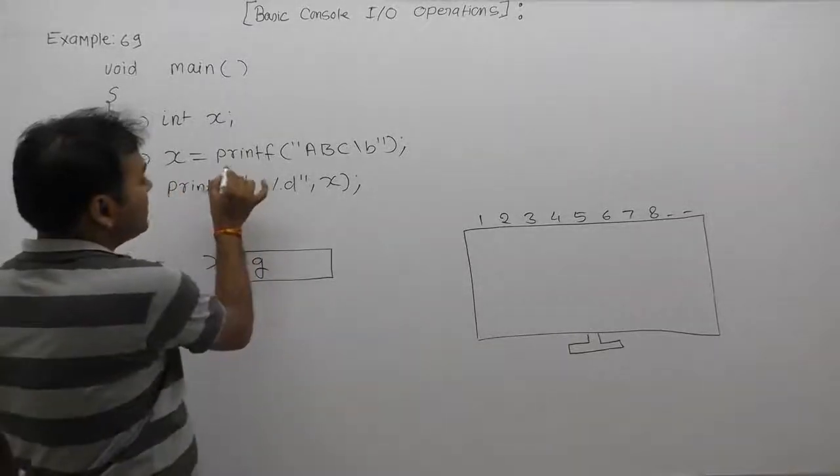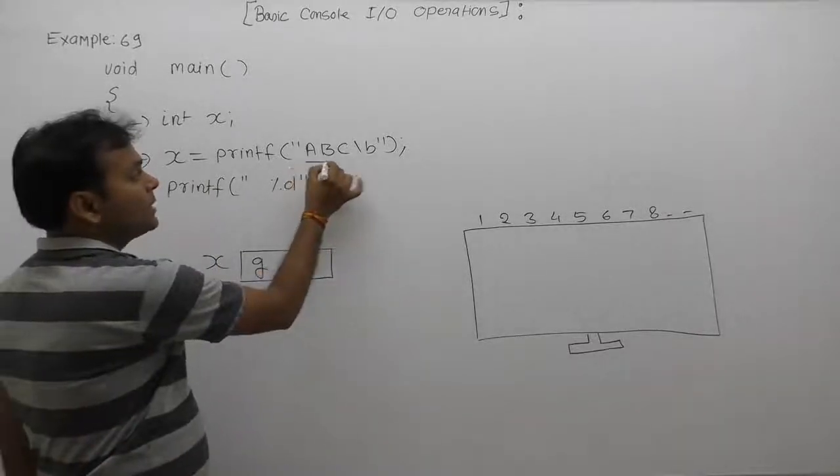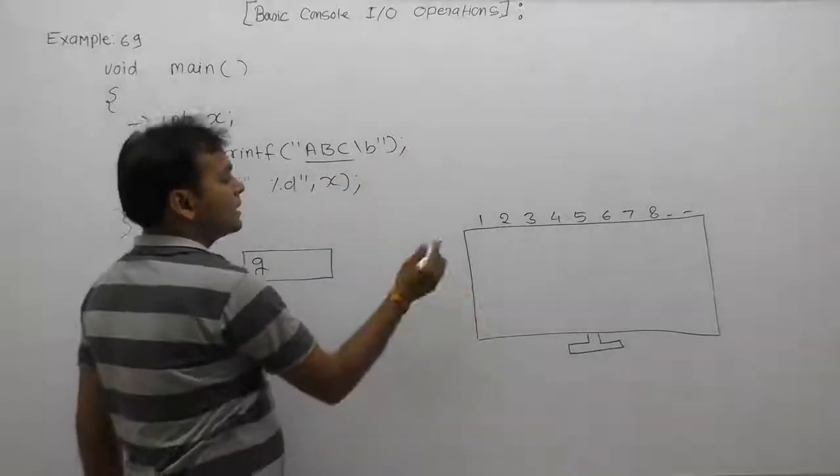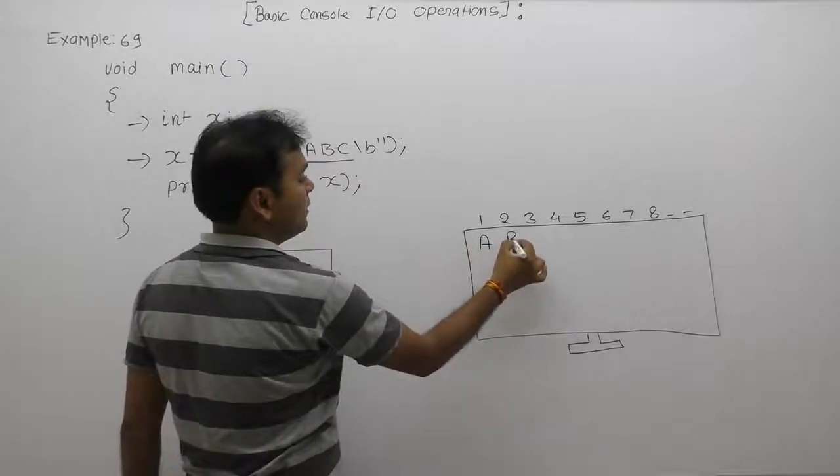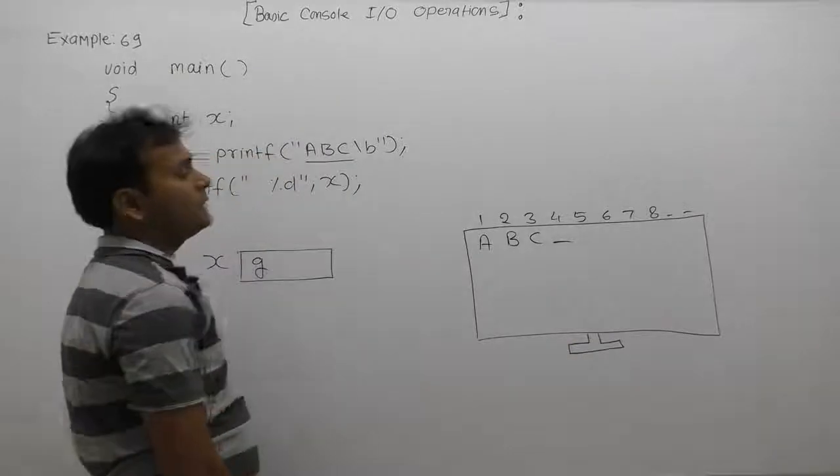In that case, printf's working is optionally displaying the given message on the monitor. As we see, in that case the beginning three characters are abc, which are printable, therefore it will be displayed on the monitor directly. After displaying abc, the cursor will be available on the fourth position.